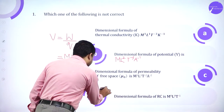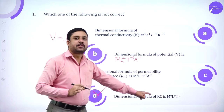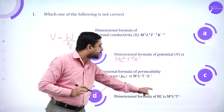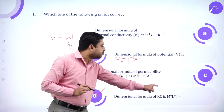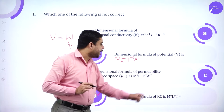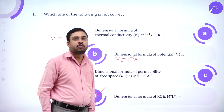The fourth option — RC — has dimensional formula M⁰L⁰T⁻¹, which is the incorrect one. That is the answer.